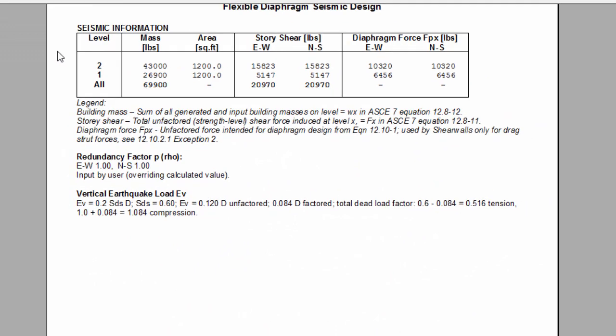The information that can be found in these tables includes the building mass, area, story shear force, and redundancy factor in each direction for each level and for the entire structure.